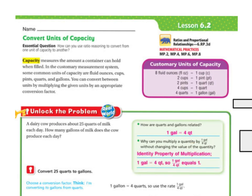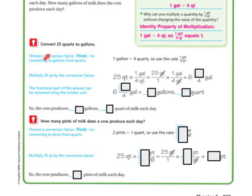Without changing the value of a quantity, you can use the identity property of multiplication. 1 gallon equals 4 quarts, so 1 gallon over 4 quarts equals 1. So to convert 25 quarts to gallons, first choose a conversion factor. I'm converting gallons from quarts, and I know that 1 gallon equals 4 quarts. So I'm going to use the rate 1 over 4, just like we used the rates in the last chapter.